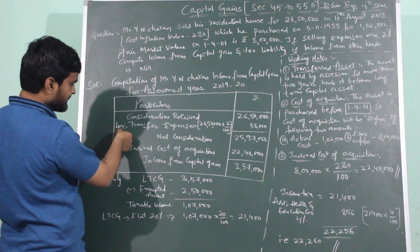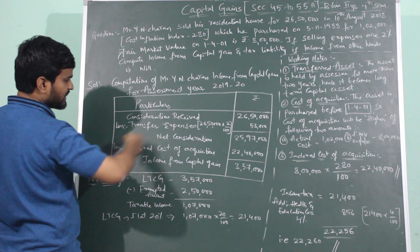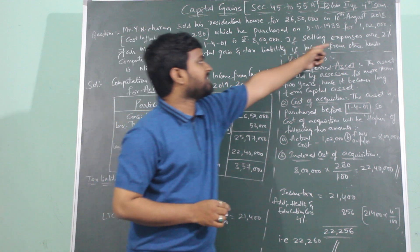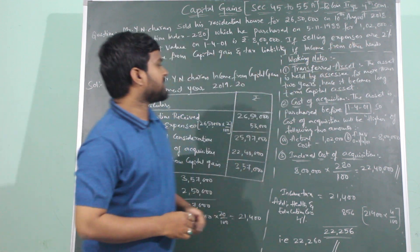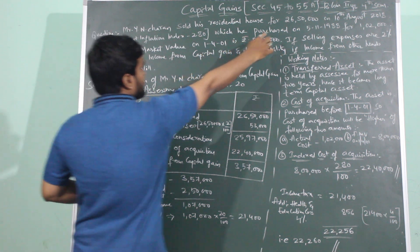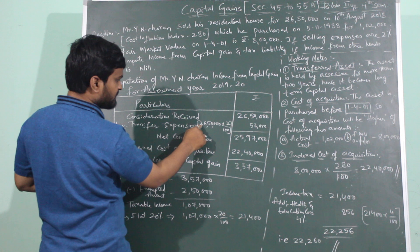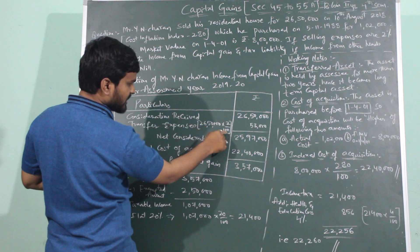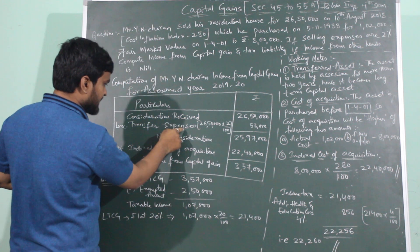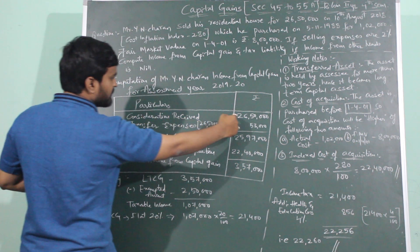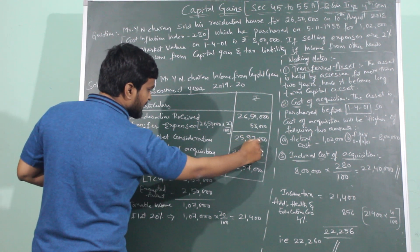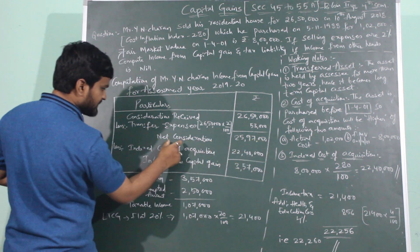From consideration received, we subtract transfer expenses. Transfer expenses are the costs incurred for selling the asset. Transfer expenses are given as 2%, calculated on the sale amount of 26,50,000. So transfer expenses will be 26,50,000 × 2 ÷ 100 = 53,000. Subtracting 53,000 from 26,50,000 gives us 25,97,000, which is called net consideration.